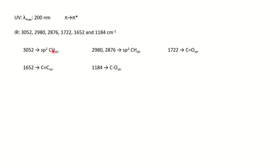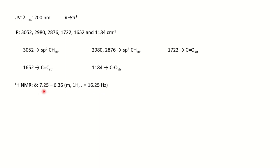The two degrees of unsaturation are confirmed by IR: 3052 cm⁻¹ confirms C=C–H (one unsaturation), supported by 1652 cm⁻¹, and the carbonyl at 1722 cm⁻¹ accounts for the second DBE. From proton NMR, at 7.25 to 6.35 ppm there is a multiplet for 1H with coupling constant J = 16.25 Hz. Another peak at 5.84 ppm also shows a multiplet for 1H with J = 16.25 Hz. Both protons share the same coupling constant, meaning they are coupling with each other — they are neighboring CH protons.